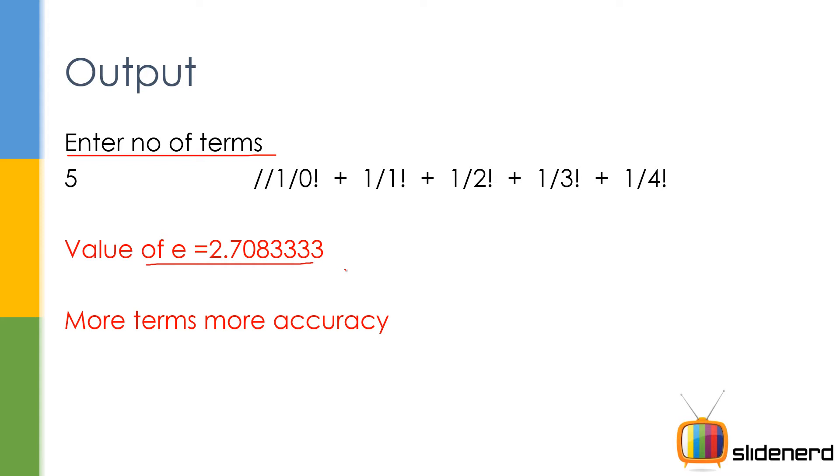At this point you probably wonder, why am I not getting 2.71828? Remember, it's all about accuracy. You put more terms, you get better accuracy. So let me show you how this works.